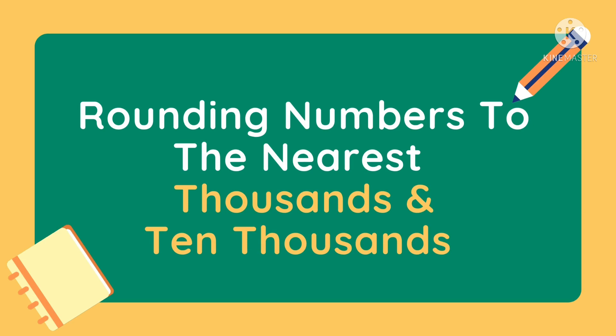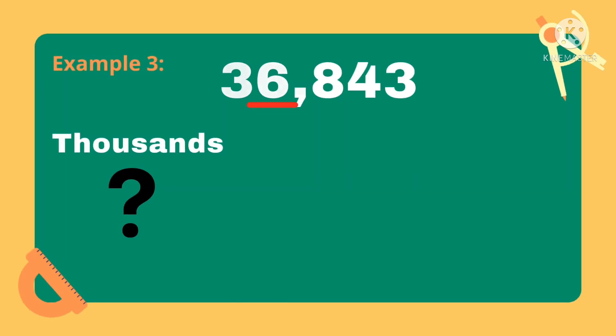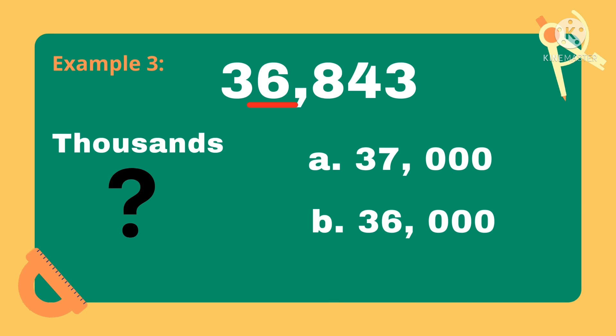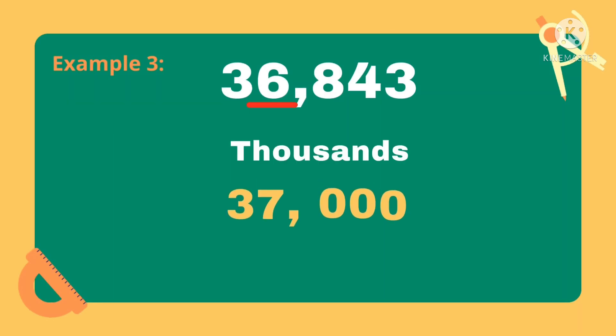Let's again check your mastery. Let us round off numbers to the nearest thousands and ten thousands. Ready? What is the correct answer if 36,843 is rounded off to the nearest thousands? A. 37,000 or B. 36,000? Good job! The correct answer is letter A, 37,000. The next digit to the right of the underlined digit is 8, and since it is 5 and above, we add 1 to the digit to be rounded, so 6 plus 1 equals 7. Therefore, 36,843 rounded off to the nearest thousand is 37,000.